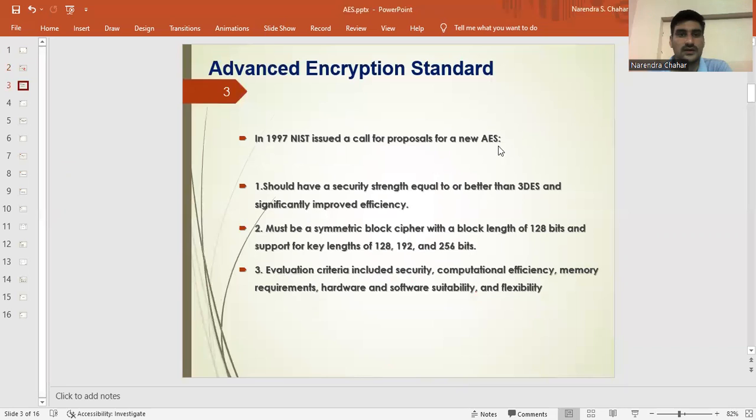Now talking about the AES. In 1997, NIST issued a call for proposals for a new advanced encryption standard. It should have security strength equal to or better than 3DES and significantly improved efficiency. Must be symmetric block cipher with a block strength of 128 bits. The strength is increased by 64 more bits from the 64-bit block.